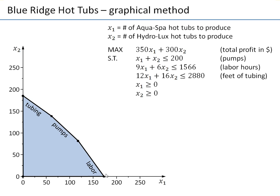What are the coordinates of those corner points? Never read them from the chart — always compute them. When we were drawing the labor constraint, we noticed it passes through the point (174, 0). We've already computed this before. Another easy point is of course (0, 0). When we were drawing the tubing constraint, we noticed it passes through (0, 180). We knew these points. The remaining two corner points must be computed by solving sets of equations. One is the intersection of the pumps and labor constraints — the first and second constraints as equalities. We already solved this previously and found the point (122, 78).